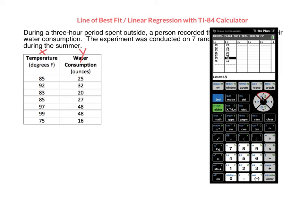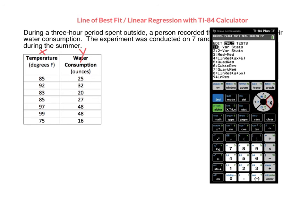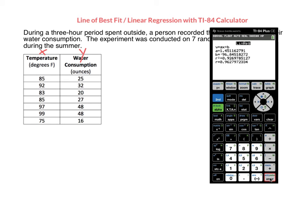So now I'm ready to get my equation. To do that, I hit the stat button again, I arrow over to calculate, and then I choose linear regression, which is number four. Click enter, and then I keep clicking enter until I get down to calculate. Click enter again, and now my screen will show the results.